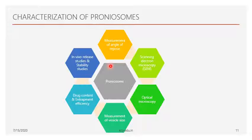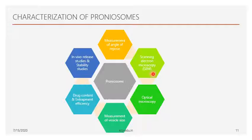After preparation of proniosomes, the following characterization and evaluation tests are performed to confirm the proniosomes. First is measurement of angle of repose, used to determine the flow property of the proniosomes. Next are optical microscopy and scanning electron microscopy, used to determine size and shape. Drug content and entrapment efficiency are used to determine how much drug is entrapped in the bilayer structure. Finally, in vitro drug release and stability studies are also performed.